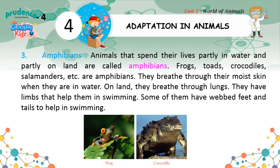Amphibians. Animals that spend their lives partly in water and partly on land are called amphibians. Frogs, toads, crocodiles, salamanders, etc. are amphibians. They breathe through their moist skin when they are in water. On land, they breathe through lungs. They have limbs that help them in swimming, and some of them have webbed feet and tails to help in swimming.